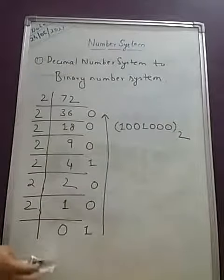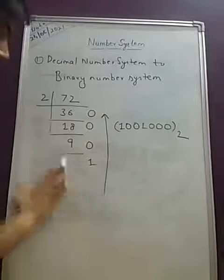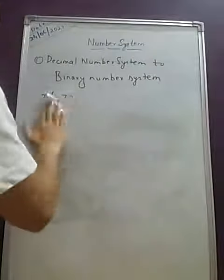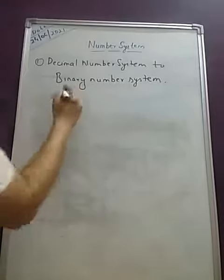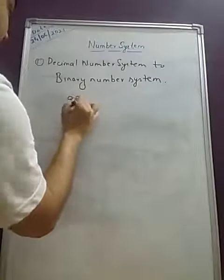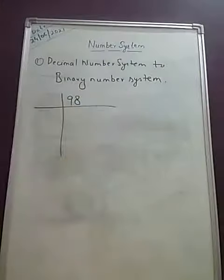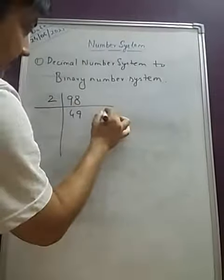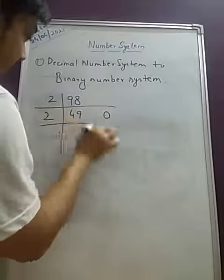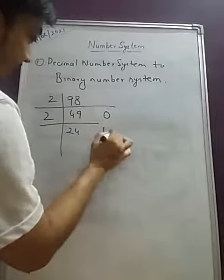Let's take one more example. In this example, I am taking a number that is 98 and we have to start dividing it by 2. So how many times it will go? It will go 49 times and the remainder is 0. Now it will go for 24 times, 1 will be the remainder.